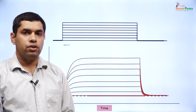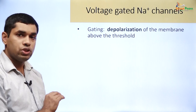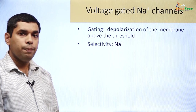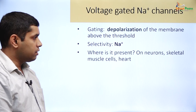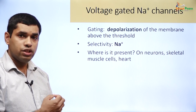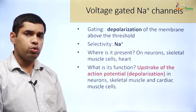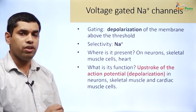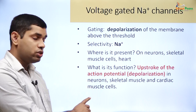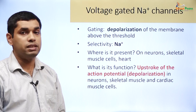Let us now begin with a study of the voltage-gated sodium channel. It is voltage-gated — it opens with a depolarization of the membrane above a certain threshold. Its selectivity is for sodium. It is present on neurons, skeletal muscles, and in the heart — tissues that can have an action potential. The voltage-gated sodium channel is responsible for creating the depolarization or the upstroke of the action potential in neurons, skeletal muscle, and cardiac muscle cells. Voltage-gated sodium channels do not cause the action potential in pacemaker cells.